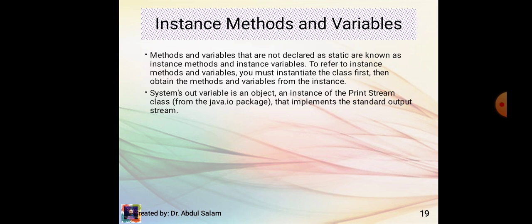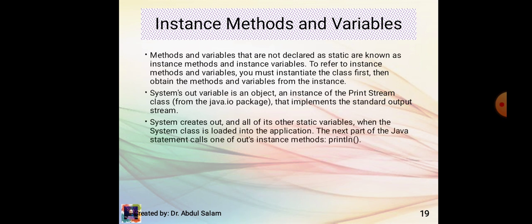System's out variable is an object — an instance of the PrintStream class from the java.io package — that implements the standard output stream. System creates out and all of its other static variables when the System class is loaded into the application.